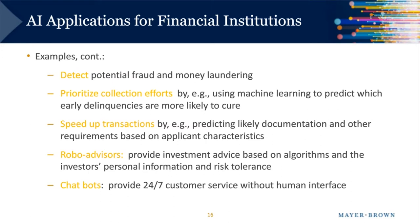Institutions can also use AI for lead generation — leveraging large volumes of external or internal data to most efficiently identify lead targets. Finally, institutions use AI right now to underwrite credit. They can speed the underwriting process by rendering automated decisions on clear-cut cases, and they can also potentially approve applicants that wouldn't qualify under traditional credit criteria.